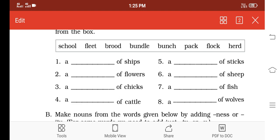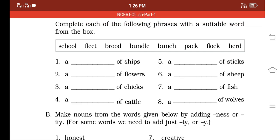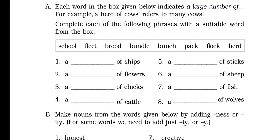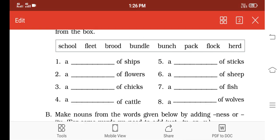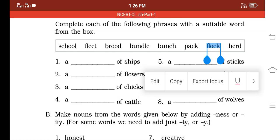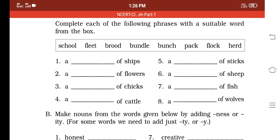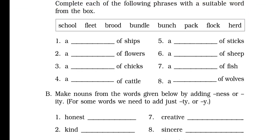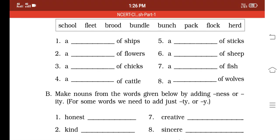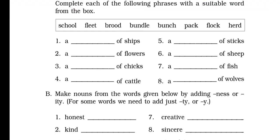The fifth one is sticks: a group of sticks is 'a bundle of sticks.' Then sheep: what do we call a group of sheep? Flock. 'A flock of sheep.' You have to write there. Then fish: a group of fish is called 'school of fish.' The last one is wolves. What is left here? Pack. The last one is 'pack of wolves.' That's all you have to write there.